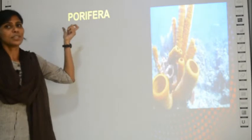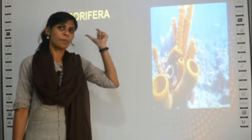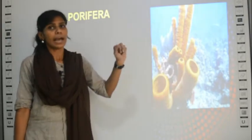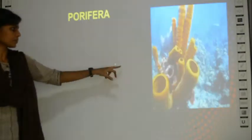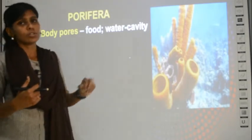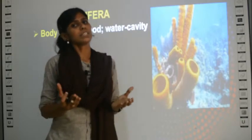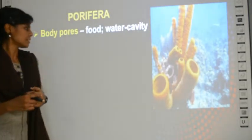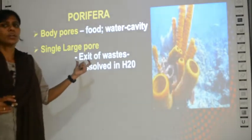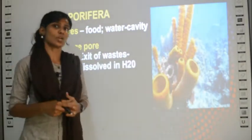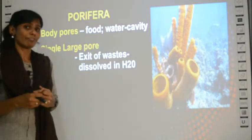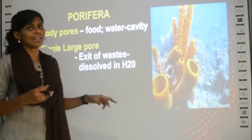Let's quickly revise each group, starting with Porifera. The term porifera stands for pores. Animals in this group will have pores - small openings throughout their body - and they will have a very large opening through which they take in their food. It is also a cavity, meaning an empty space where water and food can enter. Through this pore, the exit of wastes also occurs - released in dissolved form in water.